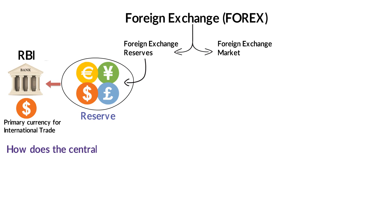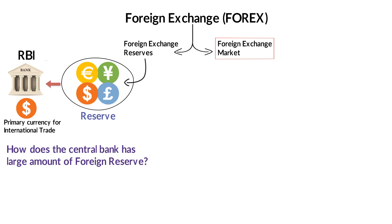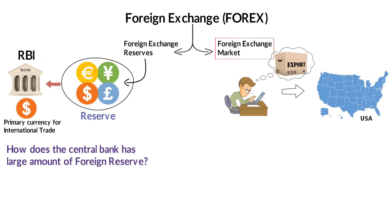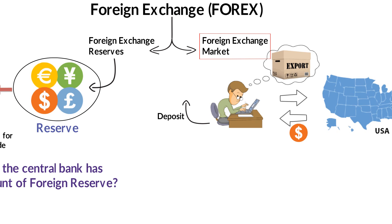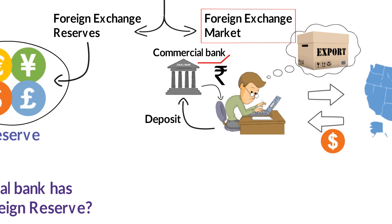You must be wondering how the central bank gets hold of these large amounts of foreign currency as reserves. First, I'll tell you how the foreign exchange market works and who the major participants are. Imagine you are an exporter with goods to export to the United States. Your trading partner will pay you in dollars. You take that foreign currency and deposit it in your local commercial bank so that you can exchange it for local currency, because you need local currency to pay your workers and suppliers.